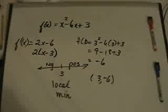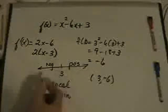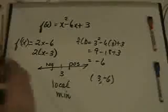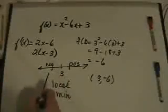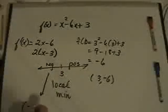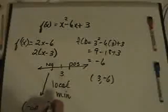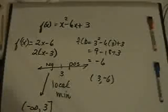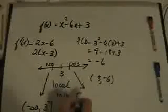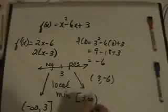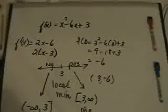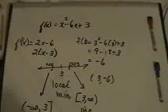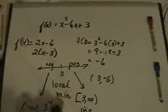Sometimes you'll also be asked on what intervals your function is increasing or decreasing. According to my number line, from negative infinity to 3, the function is decreasing. From 3 to infinity, it is increasing. Because the function is decreasing then increasing, you have a local minimum at x = 3.